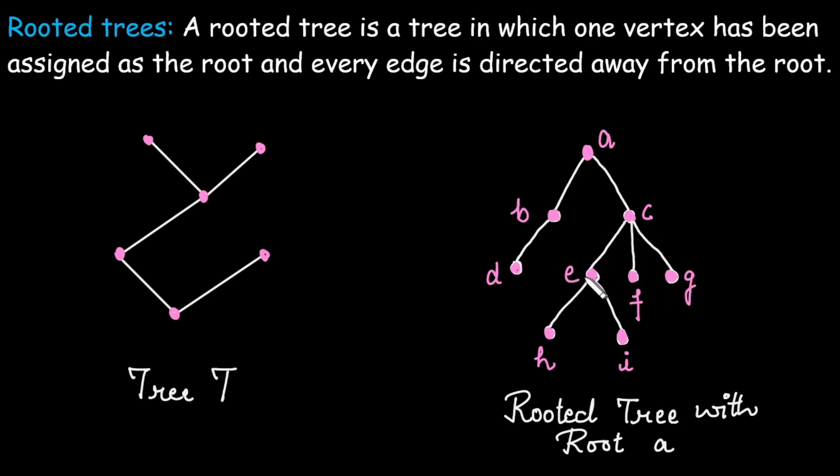So in general, a rooted tree is a tree structure where one specific vertex is a starting point that is called the root and all other vertices are organized in levels beneath it.